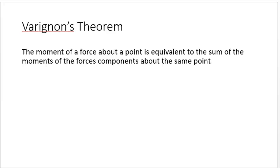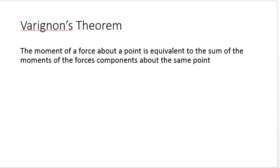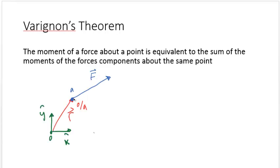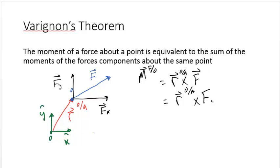Varignon's theorem is an extension of the moments of a set of forces about a point O. His theorem states that the moment of a force about a point is equivalent to the sum of the moments of the vector components of the force about the same point. Given a force F that can be resolved into X and Y components, the moment from force F about O is equal to R cross F. This is equivalent to R from O to A cross Fx plus R from O to A cross Fy.